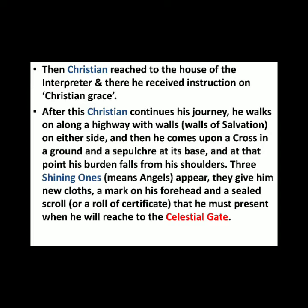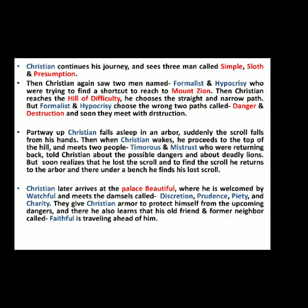At the cross, the burden falls off Christian's back. Three angels then give Christian new clothes, a mark on his forehead, and a scroll — a roll of paper — which he must hand over to the man at the celestial gate. Christian then meets three people called Simple, Sloth, and Presumption. He also explains the role of virtue and the grace of God to two people called Formalist and Hypocrisy, who were trying to find a shortcut to enter Mount Zion. Christian then arrives at the Hill of Difficulty.